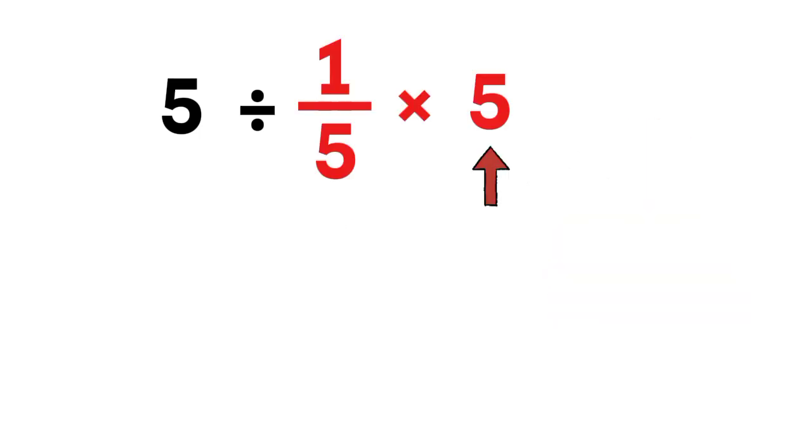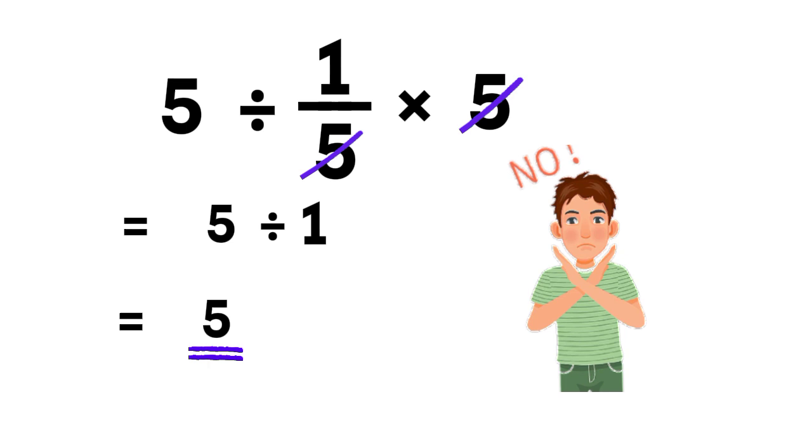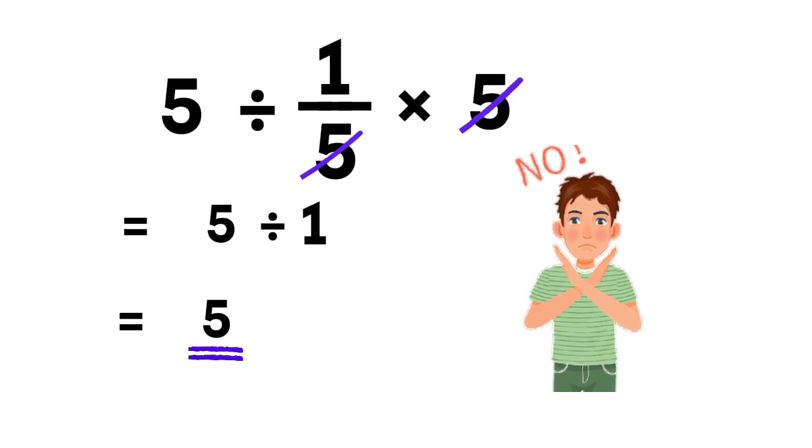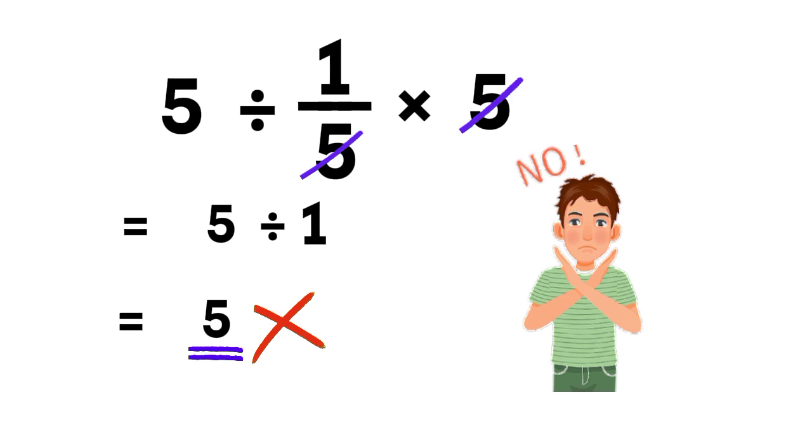First, 1 over 5 times 5. Nice, the 5 cancels the 5. We get 1. And 5 divided by 1 is 5. Oh no, not again. That smooth little shortcut feels correct. But it breaks one of the most important rules in math, and it completely destroys the correct answer.